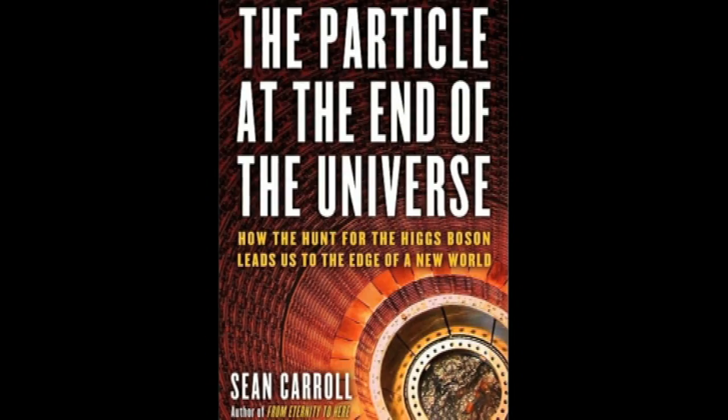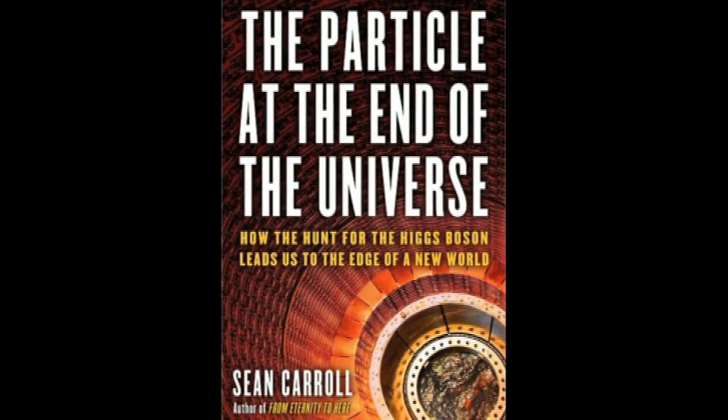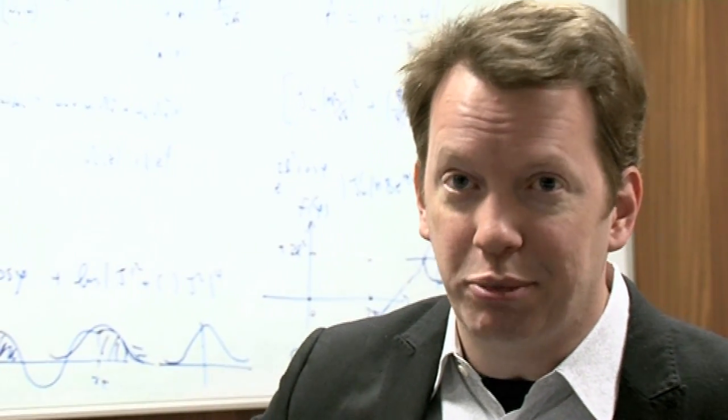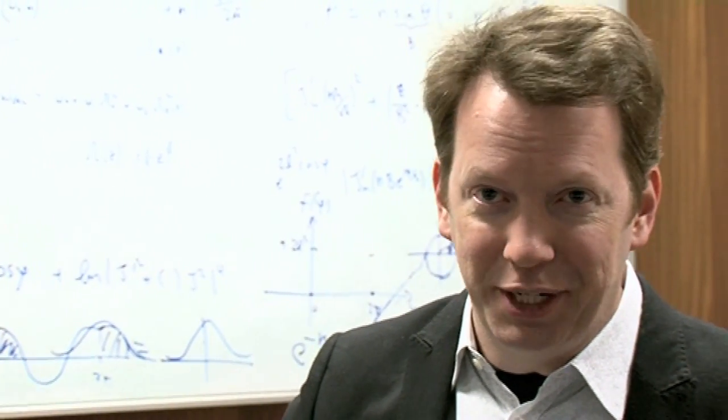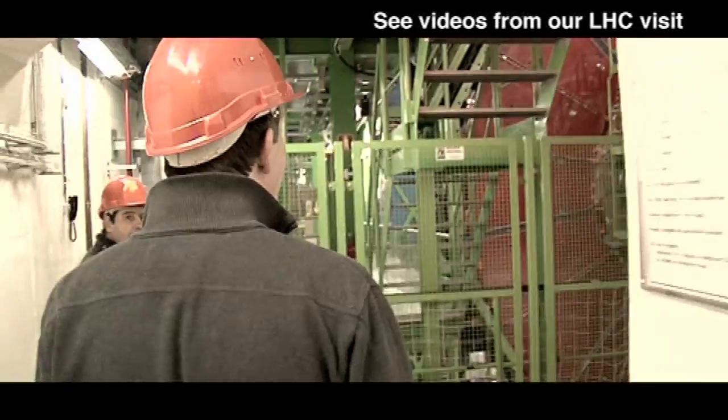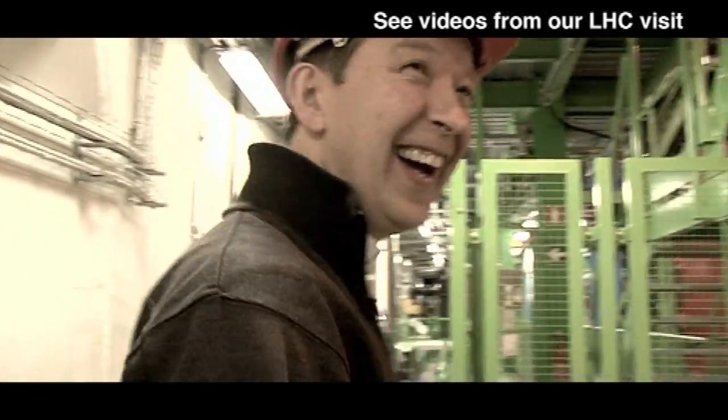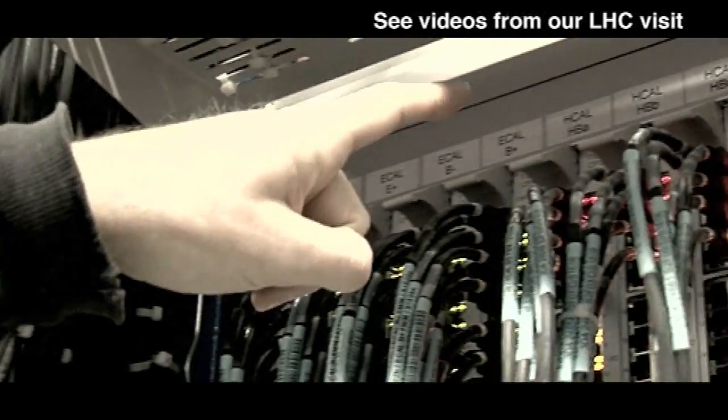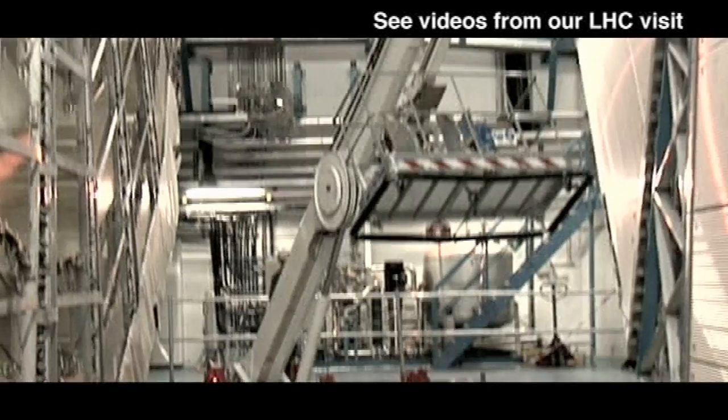Nobel prizes were given to Glashow, Weinberg, Salam, to Tuft and Veltman for figuring out the mathematical underpinnings of the theory, for the experimenters Carlo Rubia and Simon Vandermeer for finding the W and Z bosons that were predicted. But it was relying on this ingredient, the Higgs field, that had never been directly detected. The LHC is an amazing, amazing piece of equipment. I wrote this book about the search for the Higgs and I came to it as a theoretical cosmologist.